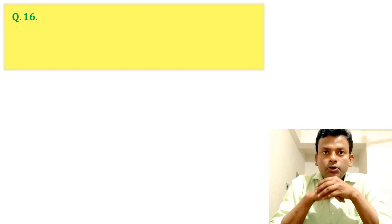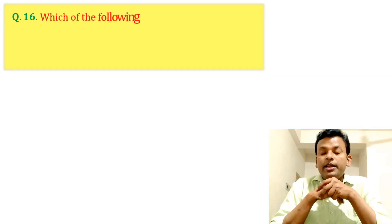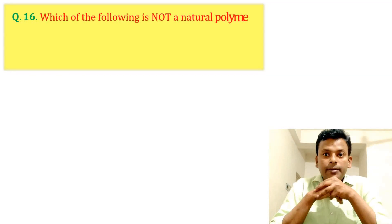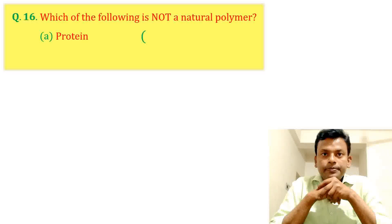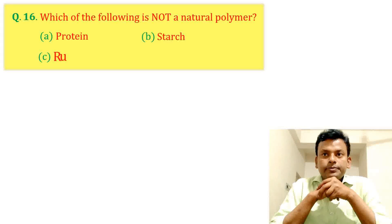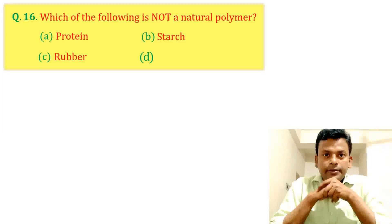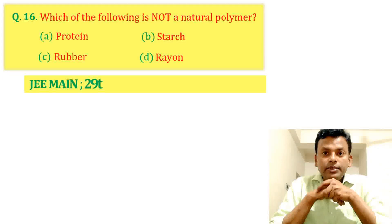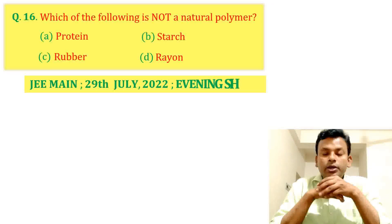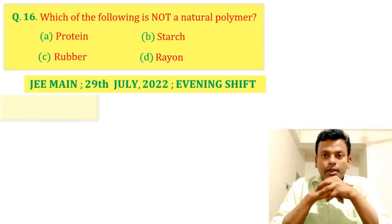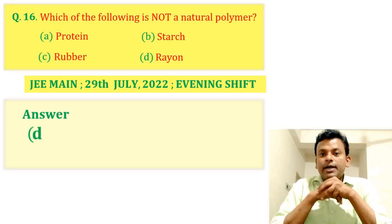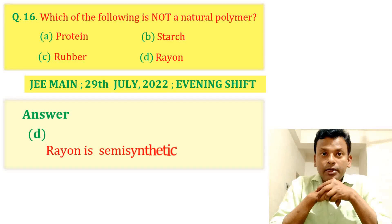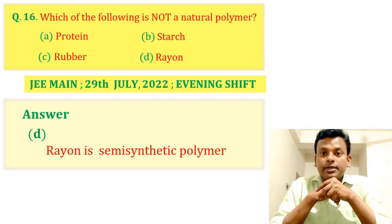Question 16: Which of the following is not a natural polymer? Options A, B, C, and D. This question was set in JEE Main 29th July 2022 evening shift. Answer: Option D is correct. Rayon is a semi-synthetic polymer. So Option D is correct.